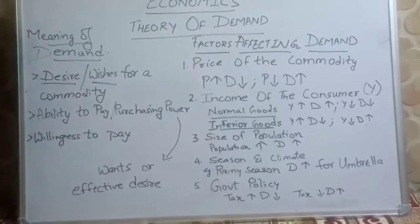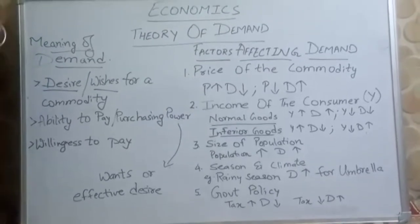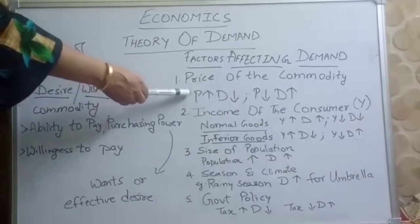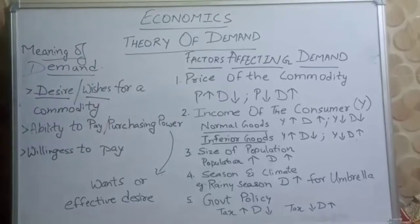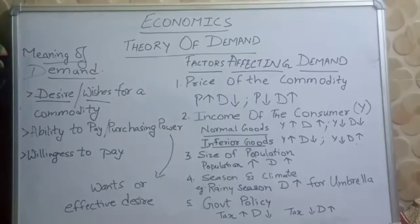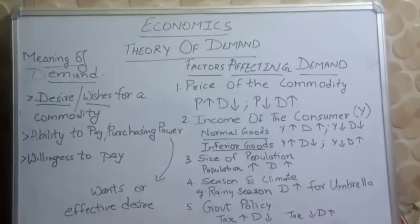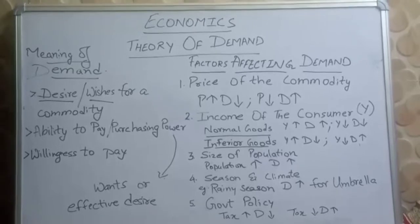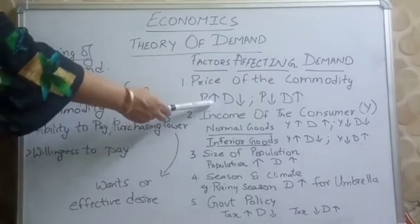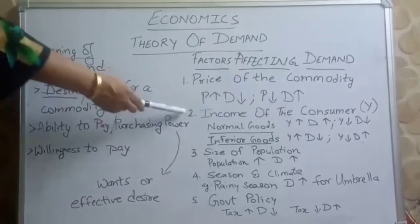Demand is affected by various things. The first factor is price of the commodity. In a normal scenario, if the price of a commodity is too high, many people are not able to purchase it. If price is high, people will not buy. But if price is low, people will purchase. So when prices are high, demand is low; when prices are low, demand is high.